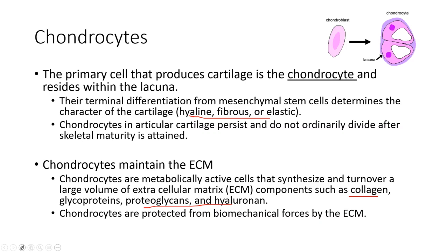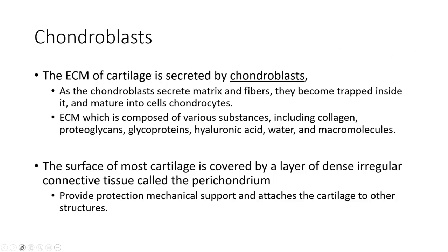Chondrocytes are protected by the ECM, which they themselves produce. Chondroblasts secrete the ECM — the collagen and similar components — and they become chondrocytes when they're trapped within those fibers, within the matrix, and then become chondrocytes, which maintain it.